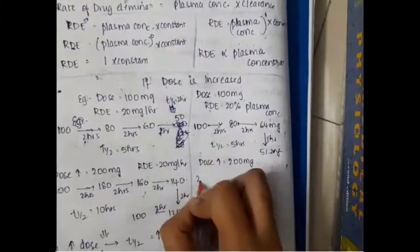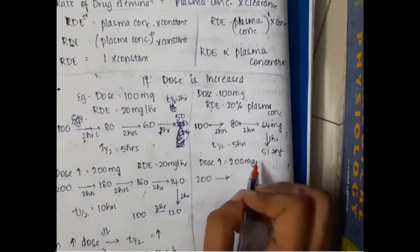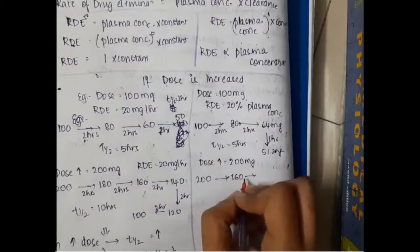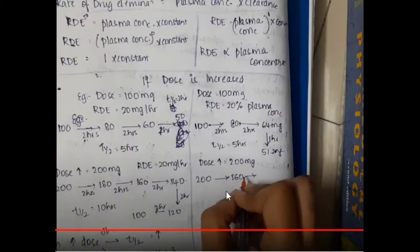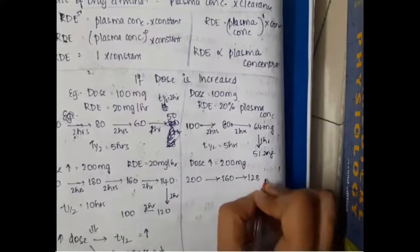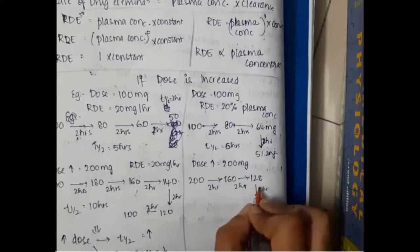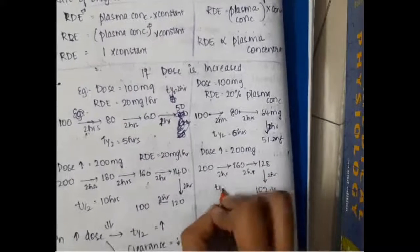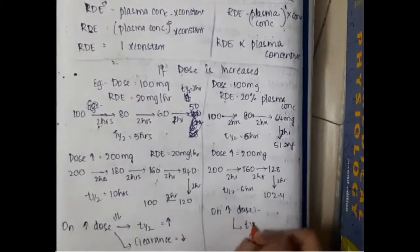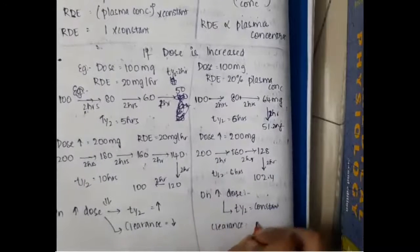Increasing the dose to 200 mg in first-order reaction: 20% of 200 mg is 40 mg lost, leaving 160 mg; then 20% of 160 mg — 32 mg lost — leaving 128 mg; then 20% of 128 mg lost, leaving about 102.4 mg. The half-life is still 6 hours. So in first-order reaction, if you increase the dose, half-life remains the same but clearance is constant.